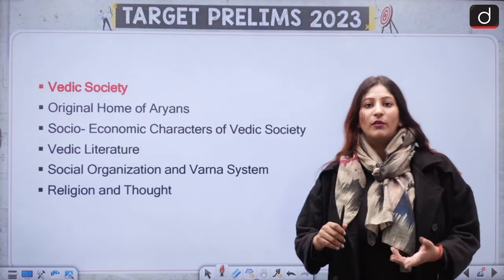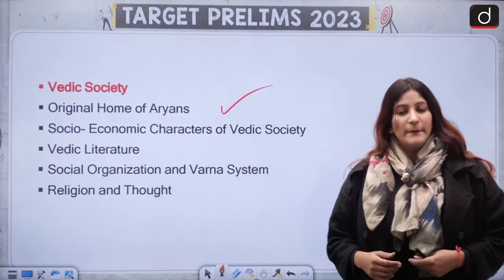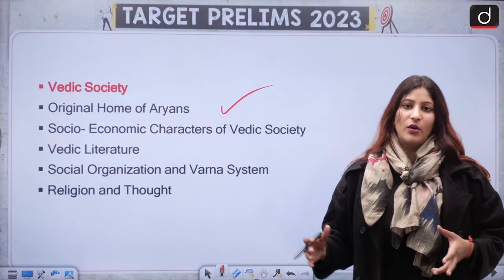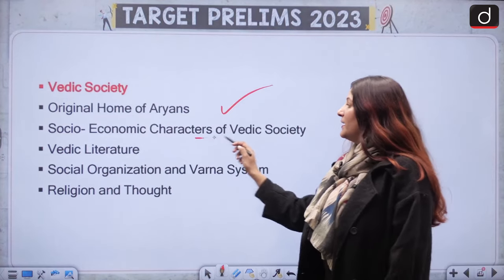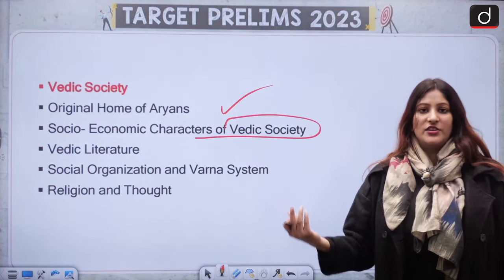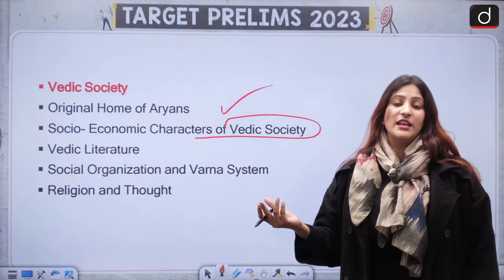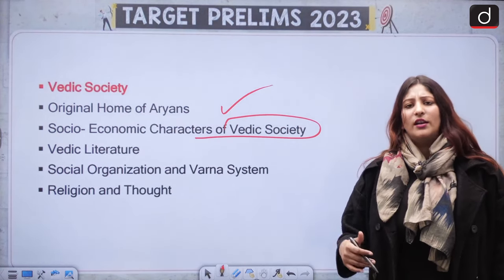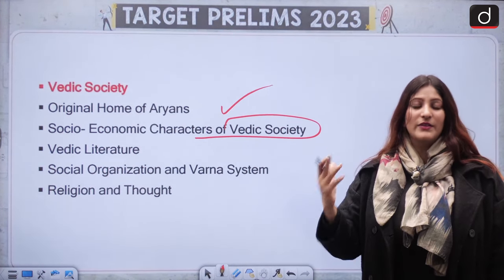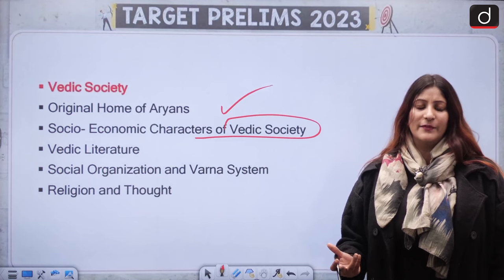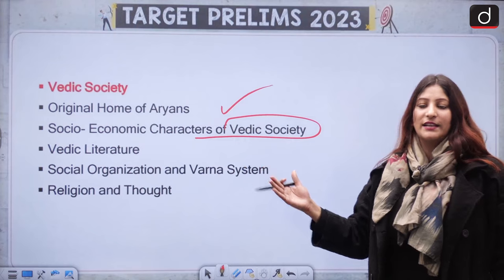For Vedic Society, we do not know the original homes of the Aryans clearly — it's all theory. But how did the theory evolve and who propounded which theories — these are important. Socio-economic characters of Vedic Society: in which era did women get subordinated, in which age was the caste system more clearly demarcated, which Mandala was written and by whom.